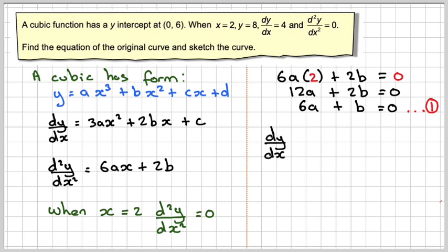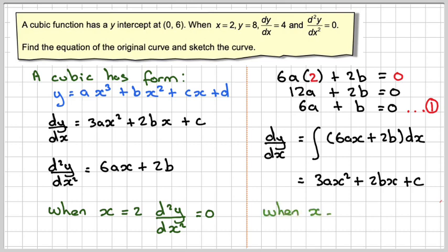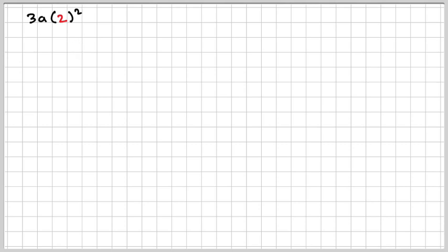For dy/dx, you would integrate to get 3ax² plus 2bx plus c. We are told when x is 2, dy/dx is 4. Substituting 2 in, we get 3a times 2² plus 2b times 2 plus c equals 4, which gives 12a plus 4b plus c equals 4. We'll call that equation 2.